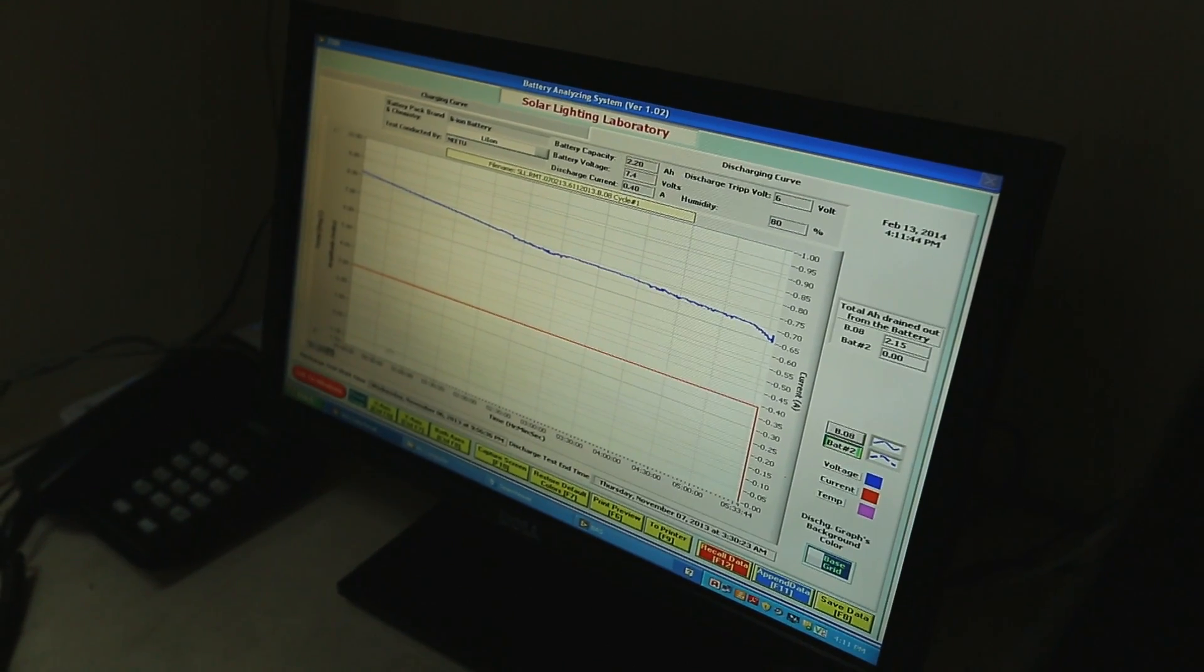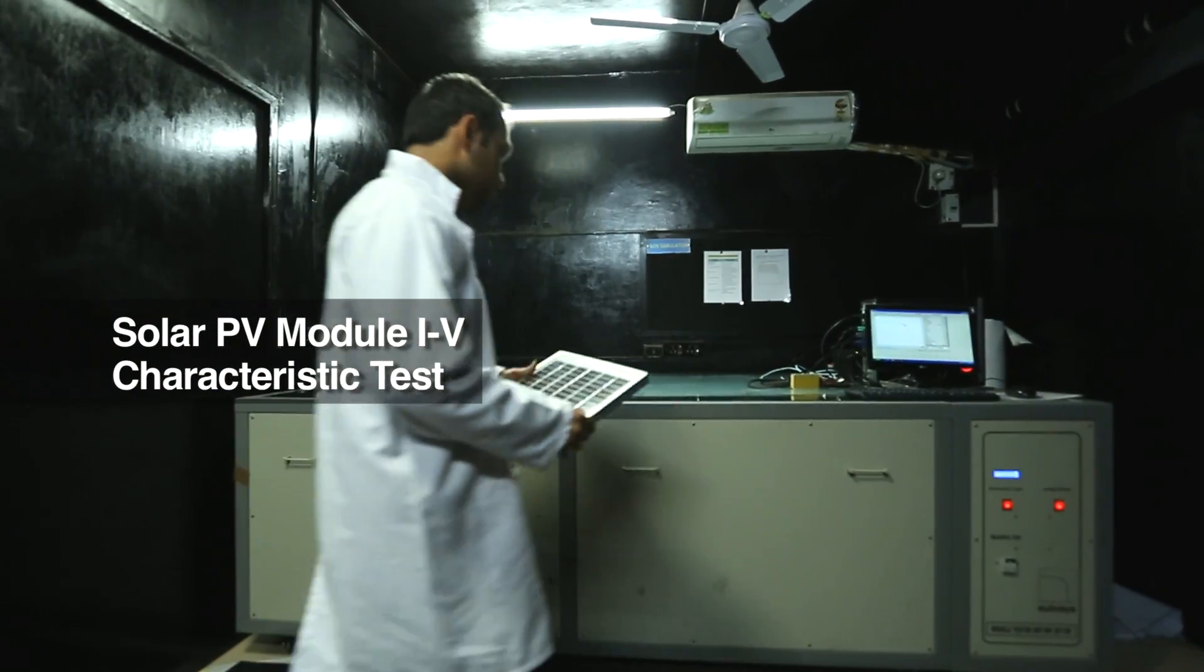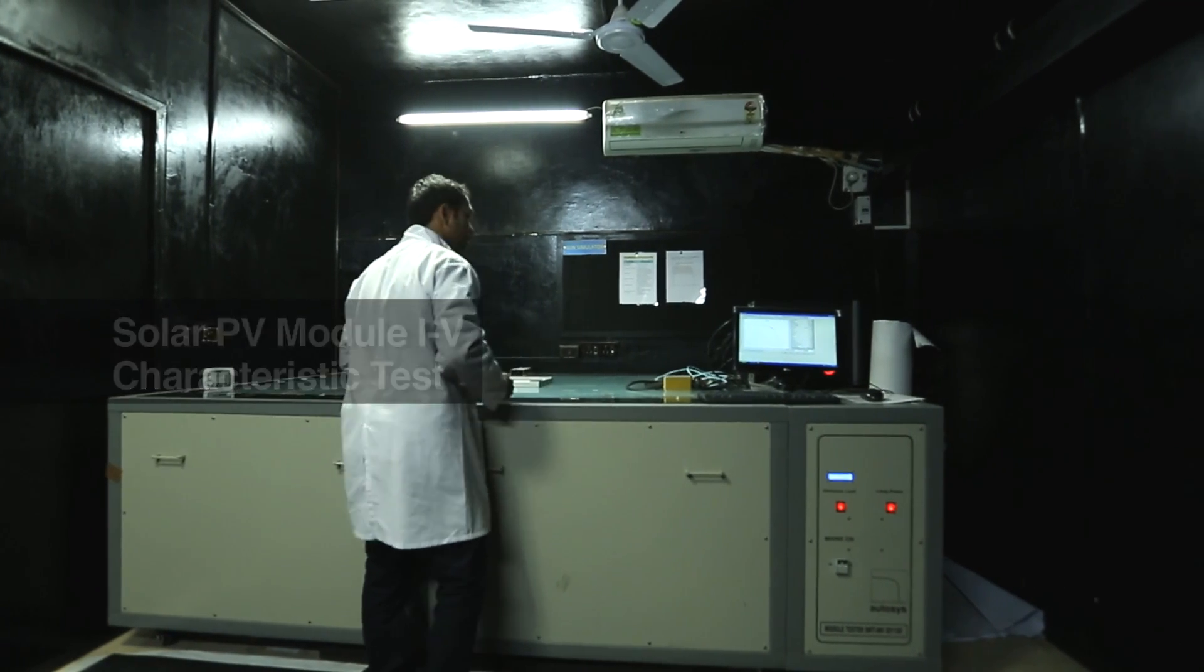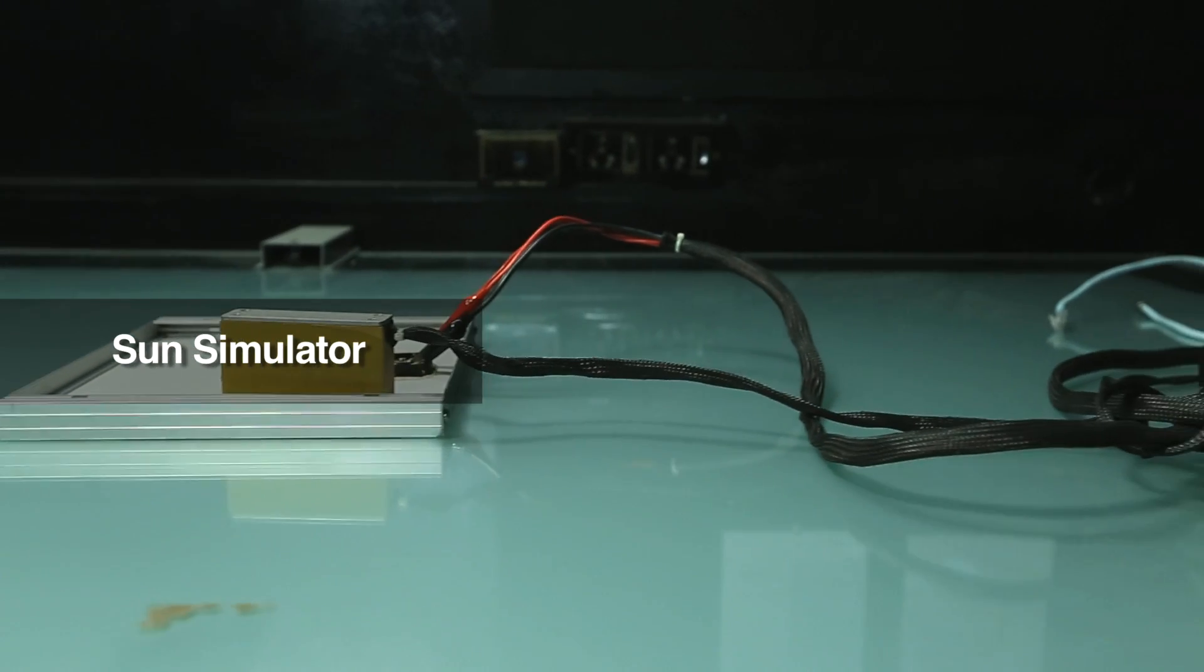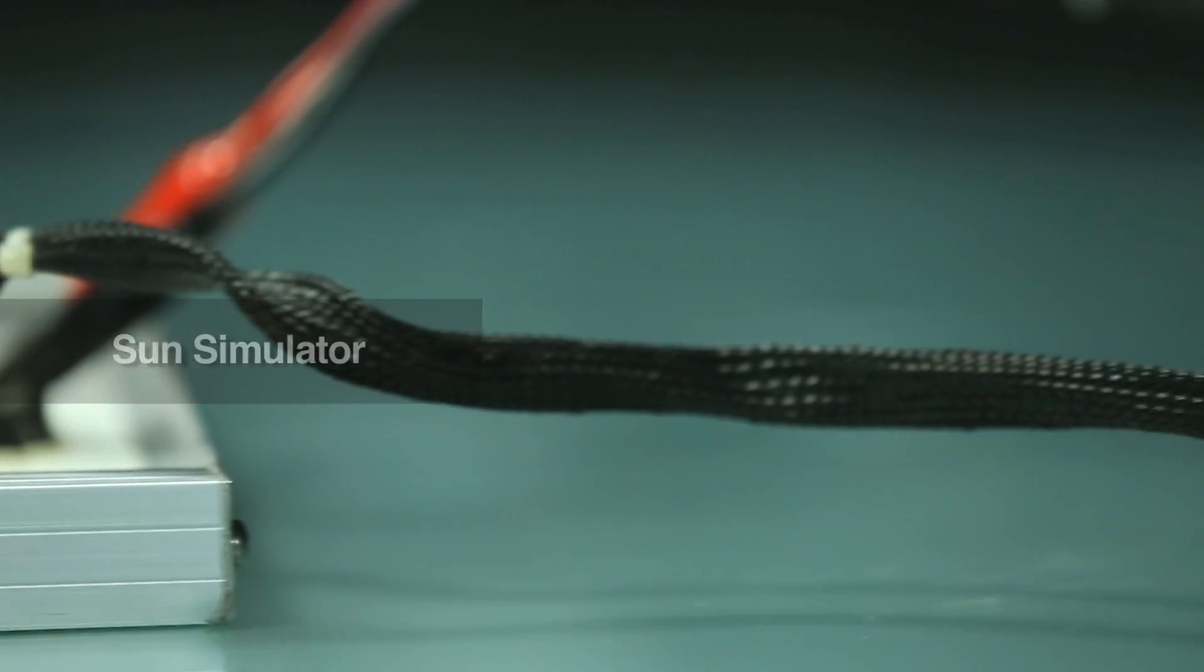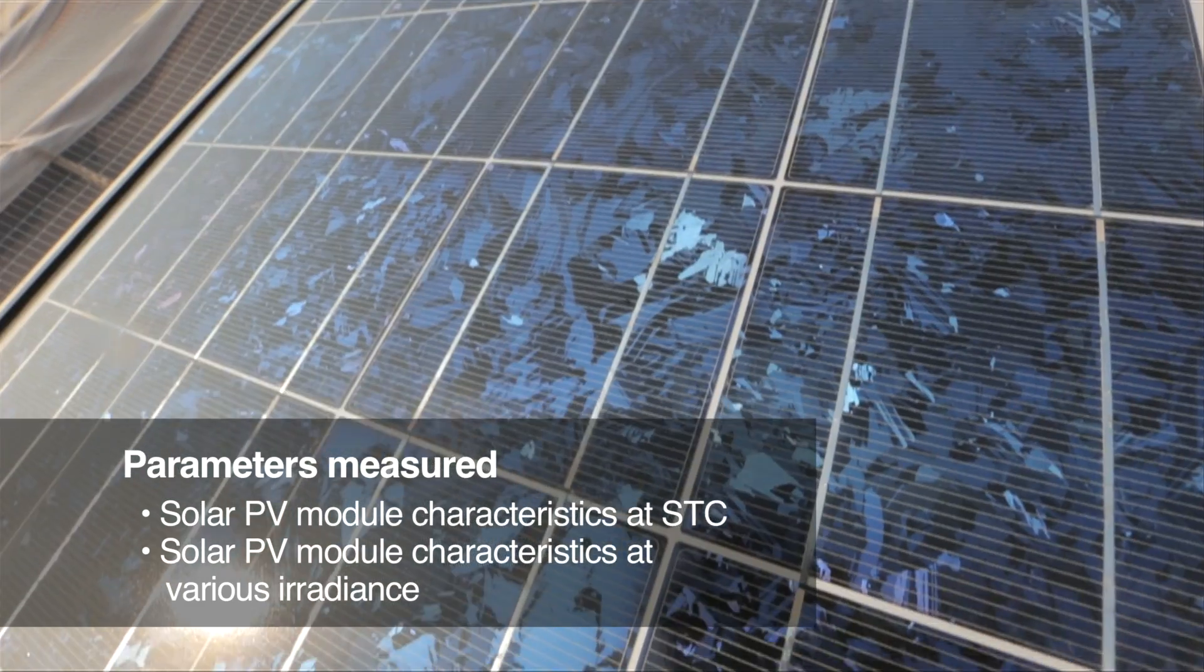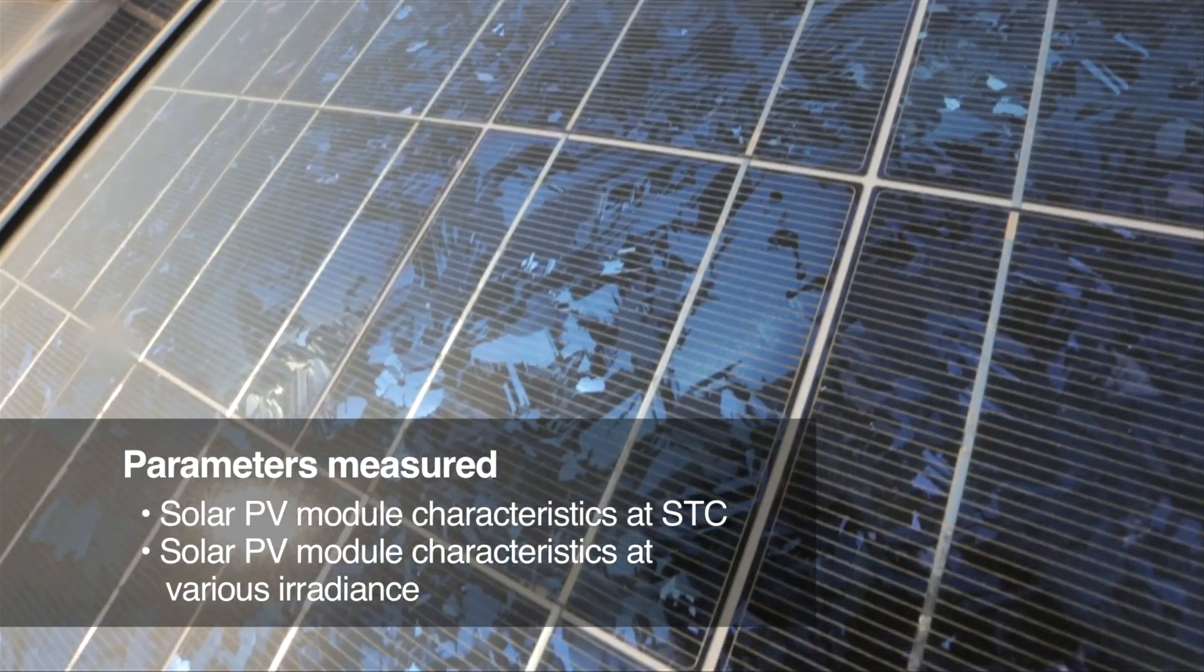In addition to this, the laboratory also has the facility to test photovoltaic module IV characteristics under standard test conditions by using a sun simulator. But beyond testing under controlled conditions, the true performance of a solar module is observed in the outdoors.